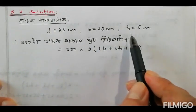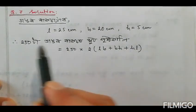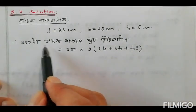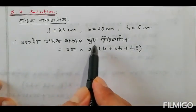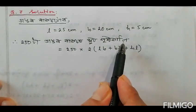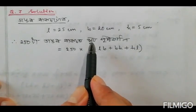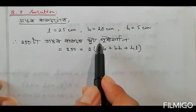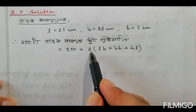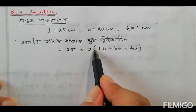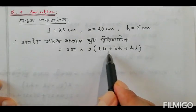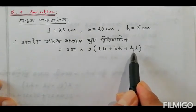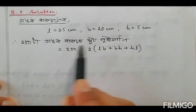One face is open (no lid). So for the larger box, the total surface area formula is: 2(lb + bh + hl). Our formula: 2 into (l×b + b×h + h×l).